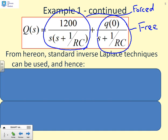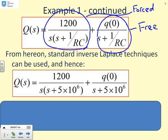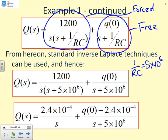Right. Let's use our standard inverse Laplace techniques to solve this. So I've put in the numbers first. I've noted that 1 over RC, using the numbers I've got on the other side, are 5 times 10 to the 6. So the first step, I've just substituted in 1 over RC is 5 times 10 to the 6. Next step, I do my partial fractions. I'm not going through those steps in fine detail. You can do that yourself. And you see what you get. You get 2.4 times 10 to the minus 4 over s plus Q(0) minus 2.4 times 10 to the minus 4 over s plus 5 times 10 to the 6. And from here on, the inverse Laplace is automatic from your tables.